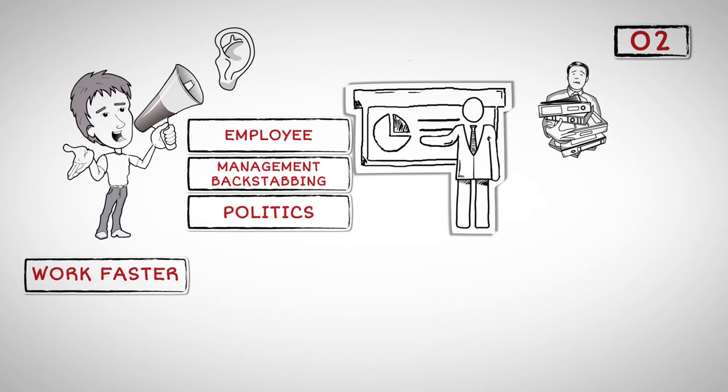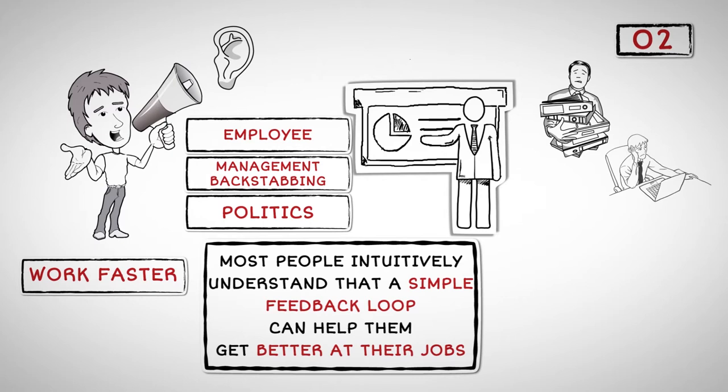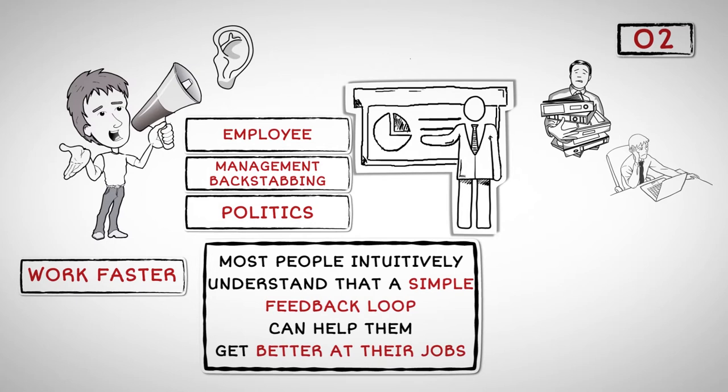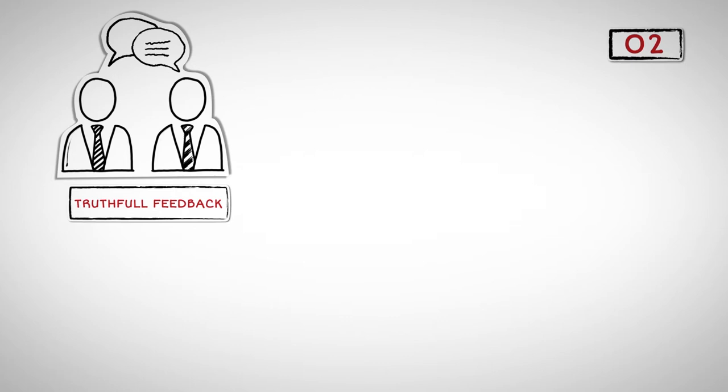It's stressful and unpleasant to hear what we are doing poorly, but after the initial stress, that feedback really helps. Most people intuitively understand that a simple feedback loop can help them get better at their jobs. You might think the first step for cultivating candor would be to begin with what's easiest, having the boss give copious feedback to the staff. But it's when employees begin providing truthful feedback to their leaders that the big benefits of candor really take off.